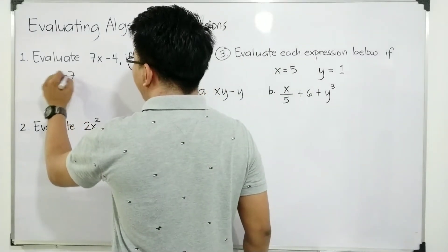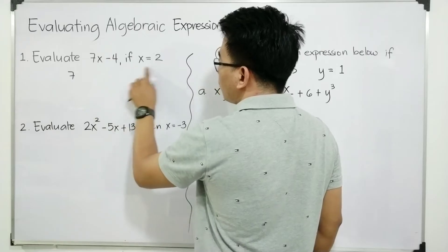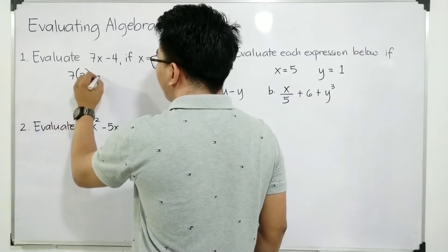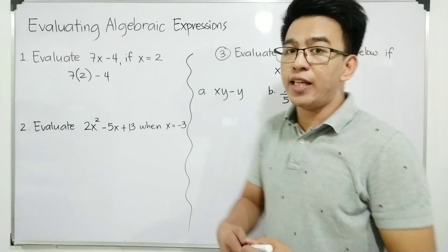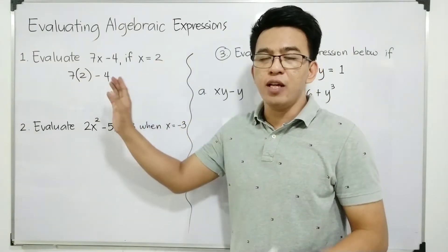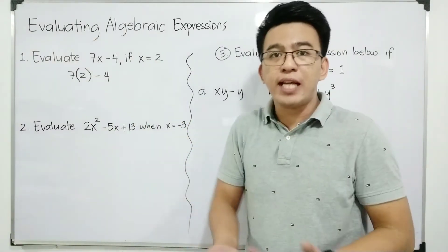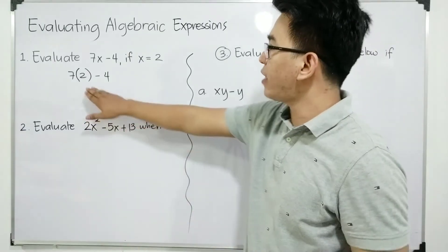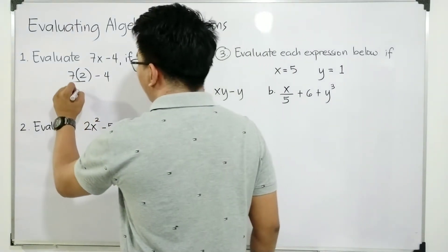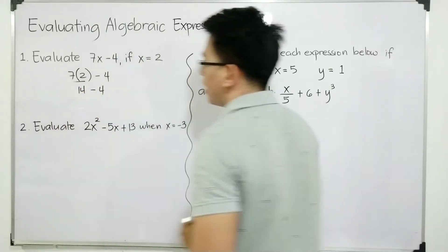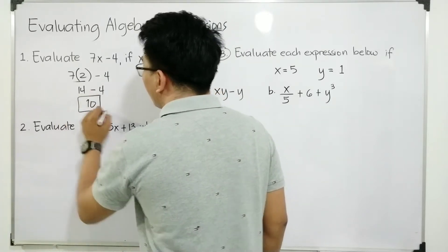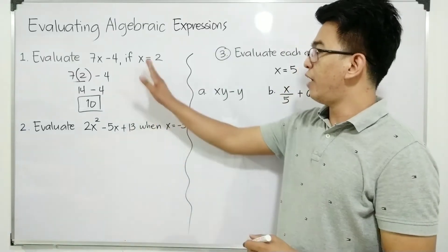So to do this, we have 7 and then remember this is your x and x is equal to 2. We can directly replace the variable x by 2 and it will become 7 times 2 minus 4. In evaluating an algebraic expression, right after substituting the value of x, think about the order of operations. So here we have 7 times 2 minus 4 — first you simplify 7 times 2, which gives you 14 minus 4, and 14 minus 4 is equal to 10. This is the answer when you evaluate 7x minus 4 if x is equal to 2.